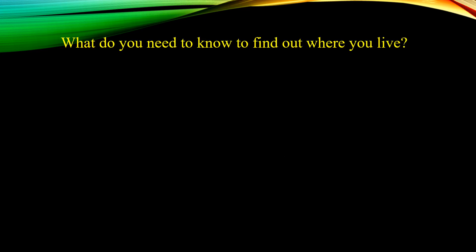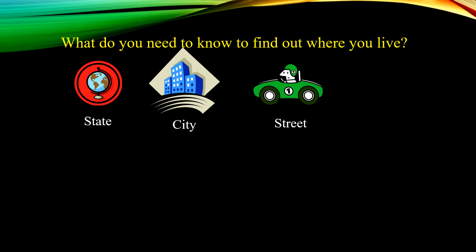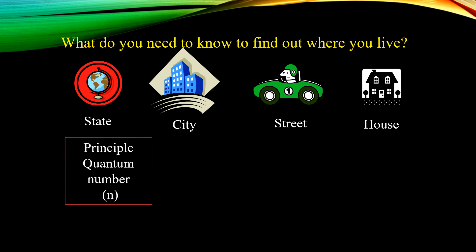Now, what do you need to know to find out where you live? Suppose I ask you where you are living — how are you going to address yourself? You are going to first tell the state, then the city where you live, then the street, and then the house where you exactly live. This is how we give an address. Here the state refers in quantum numbers to the principal quantum number — that is the main shell.